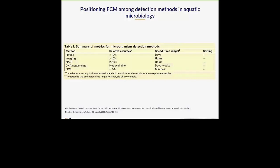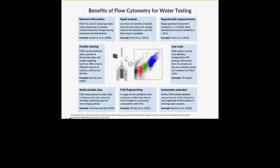The same group proposed several benefits of using flow cytometry for water testing. You have much more relevant information and very rapid analysis. Measurements are known to be quite reproducible with single operator or instrument variability less than 3%, whereas HPC tests have quite large variability between different people. FCM can also be quite low cost, there is potential for automation, you can do FCM fingerprinting with multi-variable data using several different fluorescent colors in combination with intensity and light scattering for each particle, and you can also do flexible staining.